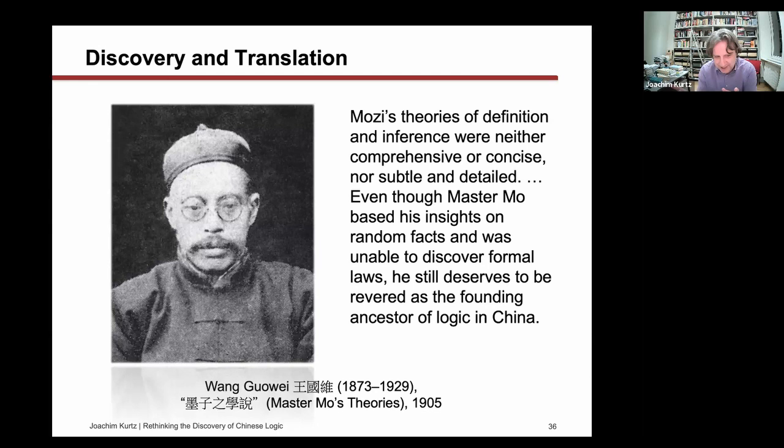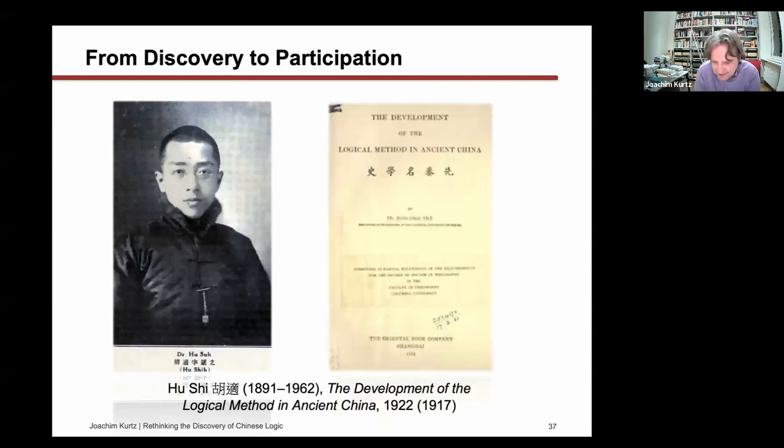Once logic was discovered, how did it become stabilized, popularized, and disseminated? We could describe that as a process from discovery to the invention of a tradition. The author who started the whole process was Hu Shi, who wrote a dissertation at Columbia called The Development of the Logical Method in Ancient China. What is important is his preface, where he tells us what he's doing—addressing the problem of how Chinese people can feel at ease in this new world, which appears so much at variance with what we have long regarded as our own civilization.